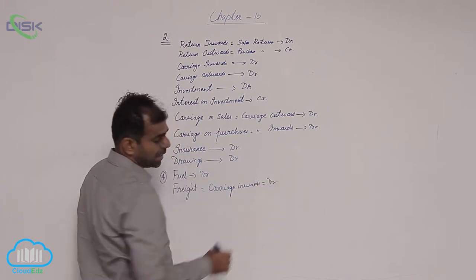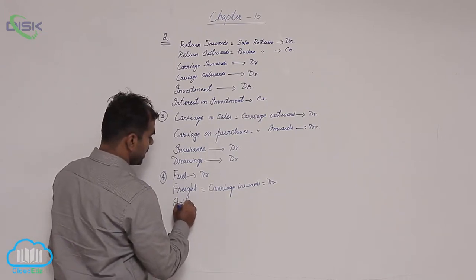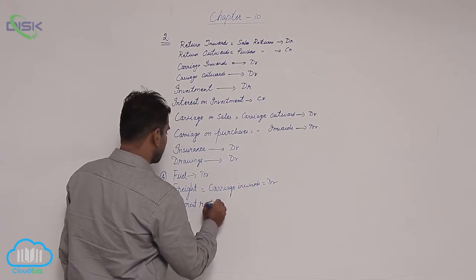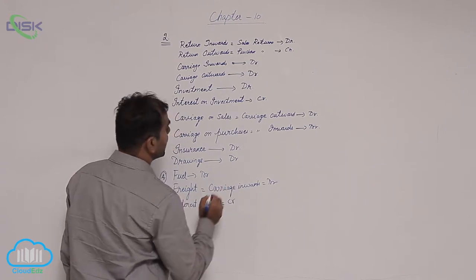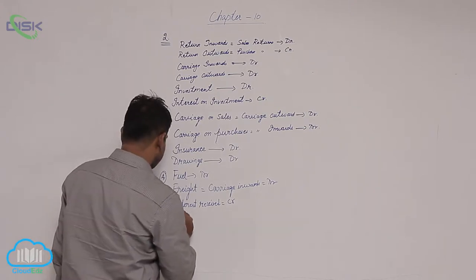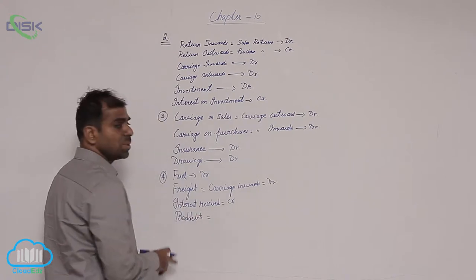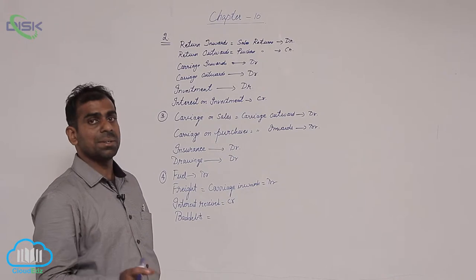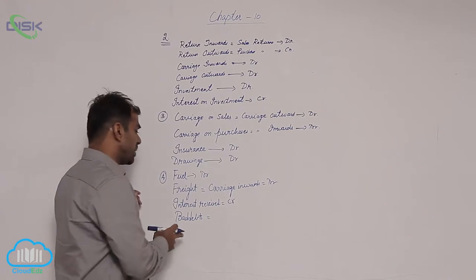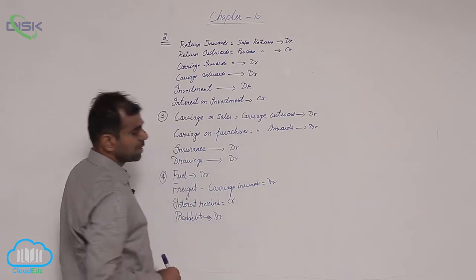So carriage inward shows debit balance. Next is interest received. Interest is a nominal account, and the word 'received' tells us it is an income. Incomes show credit balances. Next is bad debts, representing the amount owed by people who purchased goods on credit. If they don't pay, it represents a loss, and because losses come under nominal, it shows debit balance.